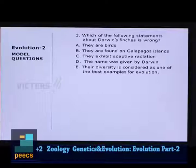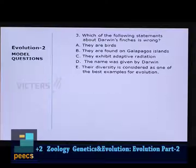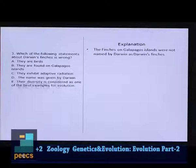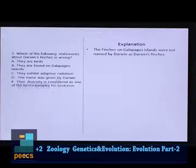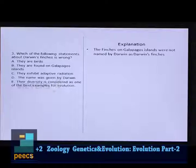Question 3: Which statement about Darwin's finches is wrong? (A) They are birds, (B) They are found on Galapagos Islands, (C) They exhibit adaptive radiation, (D) The name was given by Darwin. The finches on Galapagos Islands were not named by Darwin himself — so statement D is wrong. All other statements are correct. The correct answer is D.